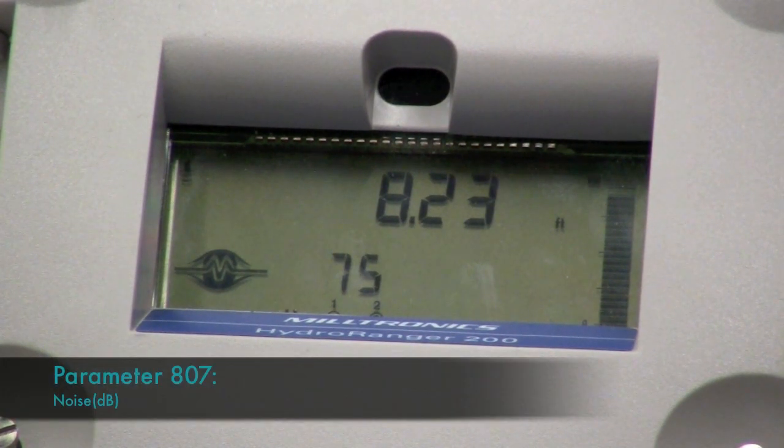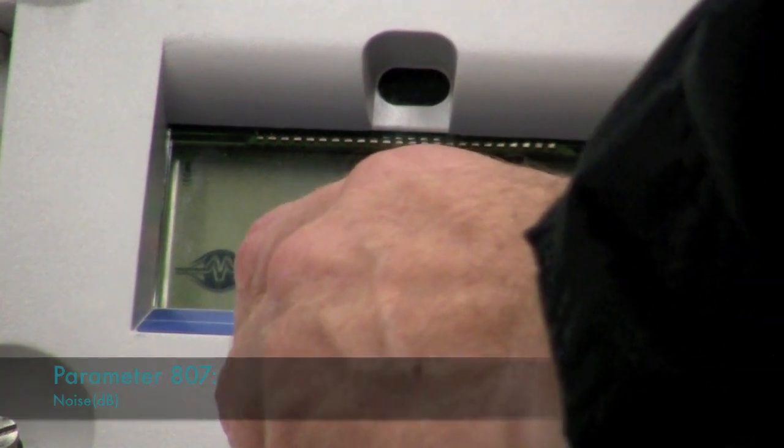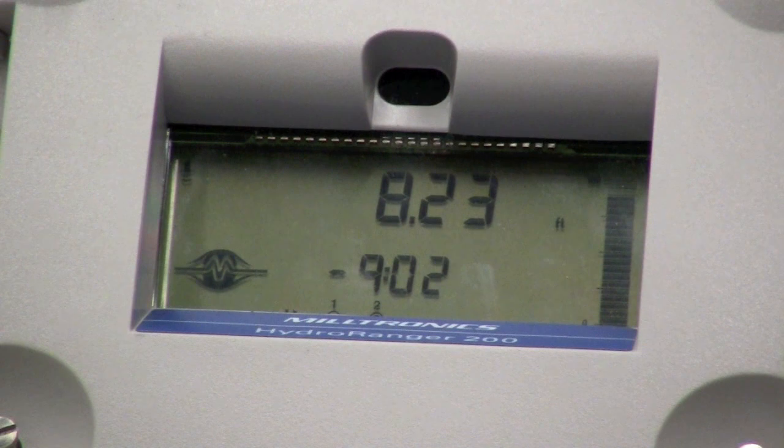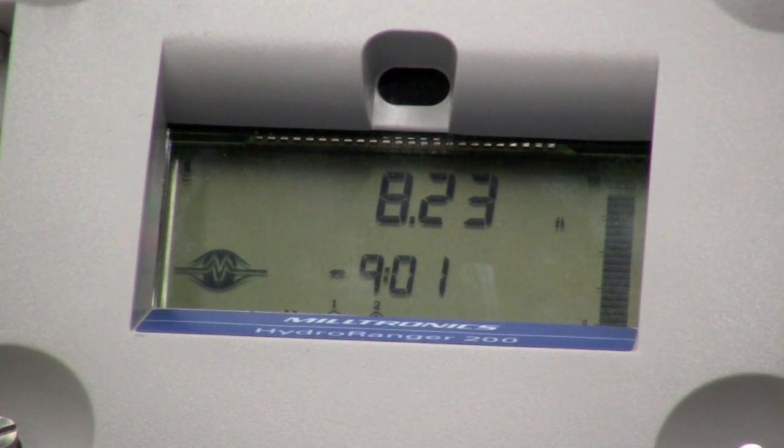Parameter 807 displays noise in dB. The two noise numbers displayed are average followed by peak. The noise may be acoustic or electrical in nature. Average noise is generally more important than peak noise. Any average noise greater than 20 dB may be a cause for concern.